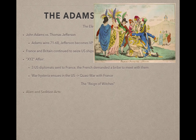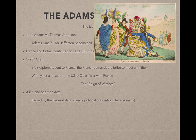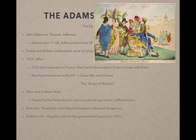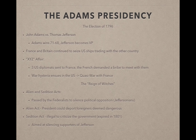The Alien and Sedition Acts were passed by the Federalists to silence political opposition — specifically the Jeffersonians, who were upset about the Quasi-War and pro-France. This was a blatant violation of the First Amendment. The Alien Act allowed the president to deport foreigners deemed dangerous. A Naturalization Act increased the years required for citizenship, preventing new immigrants from voting. The Sedition Act made it illegal to criticize the government and was set to expire in 1801 — in case the Federalists were no longer in power.